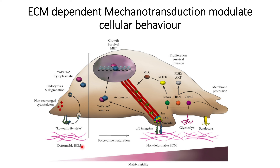Let's start with the soft ECM, here called the deformable ECM. The deformable ECM will not be able to properly interact with integrins or form a bond with them. Therefore, the interactions between integrins and the deformable ECM are very weak. Because of that, the integrin will promote its own endocytosis and that will cause its degradation within the cytosol of the cells. Also, the YAP/TAZ pathways are not formed into a complex, they will not lead to any epigenetic changes, and the cytoskeleton also remains in a non-rearranged form. So there are no significant changes observed when cells are under soft or deformable ECM.